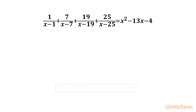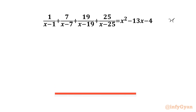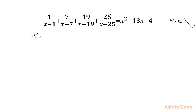Welcome to Infigyan friends. Today in this video we are going to solve one rational equation problem for the real values of x. Let us get started by writing that denominators cannot be 0, so our answer x cannot be 1, 7, 19, and 25.